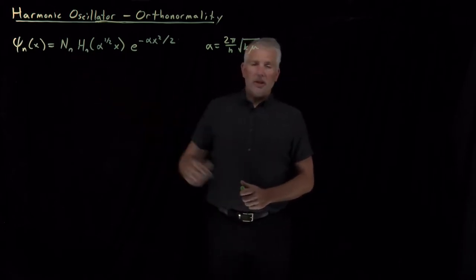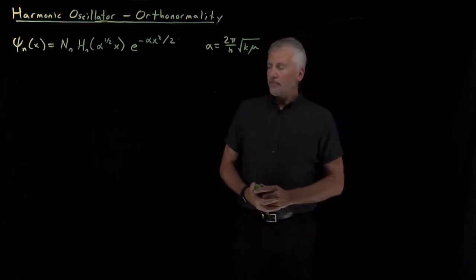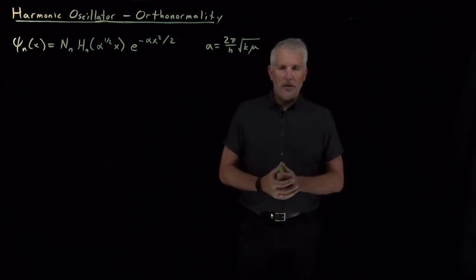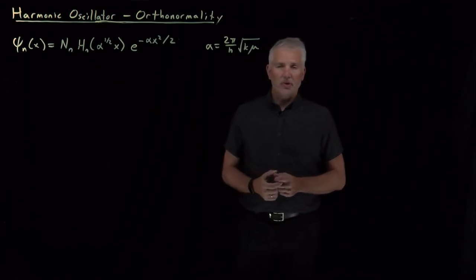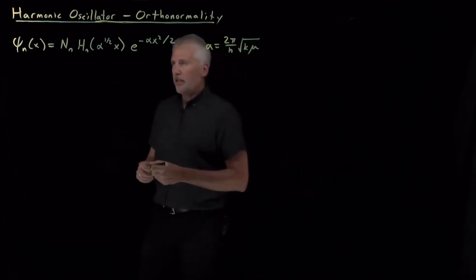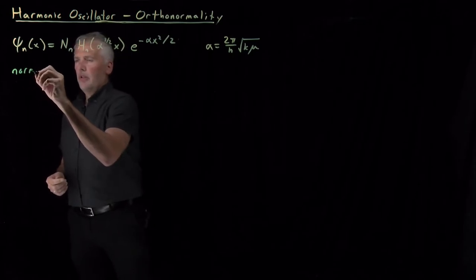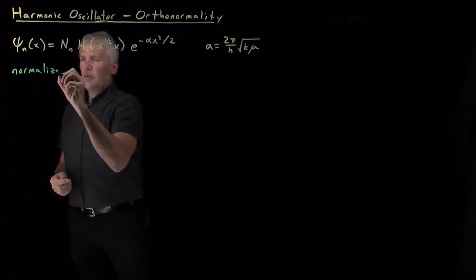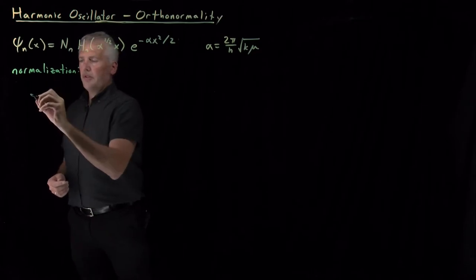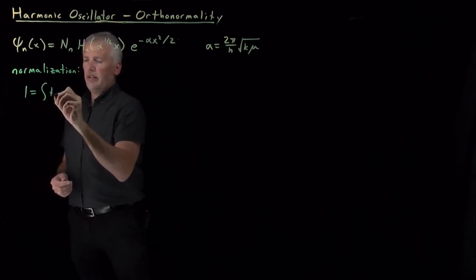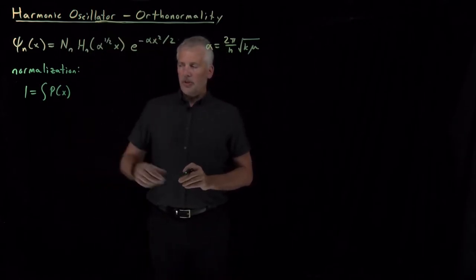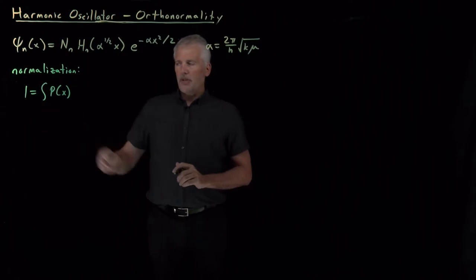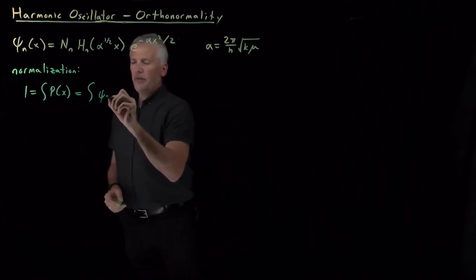We haven't yet talked about the normalization constant out front of these wave functions. As usual, once we obtain a solution to the Schrödinger equation, we can guarantee that the function is normalized, and we can also investigate whether the family of solutions is mutually orthogonal. So that's what we'll do next. Normalization involves guaranteeing that if I integrate the probability of finding the particle over all positions, that has to come out to 1, and probability is wave function squared.